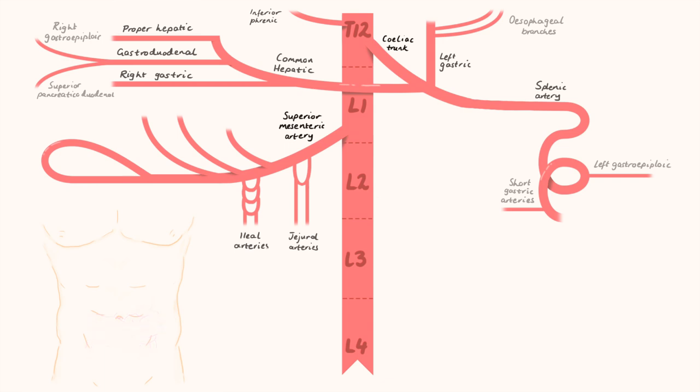We then have one branch that goes up and finishes the work of the common hepatic. This is the inferior pancreaticoduodenal. Next, the first two parts of the large intestine are supplied. We have the middle colic and right colic arteries.